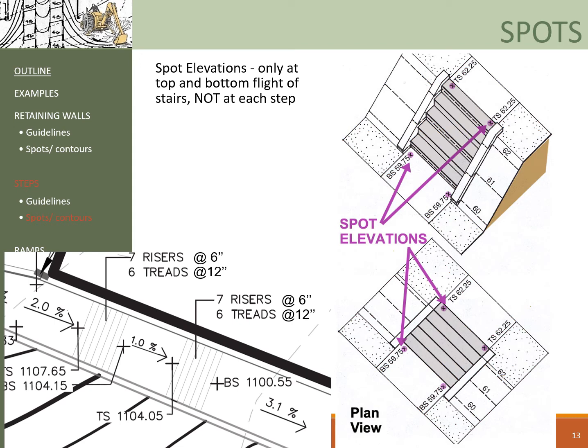You don't have to label TS and BS at both ends. Additionally, you need to calculate how many risers and treads each flight has and label their quantities and dimensions. For example, for a given flight of stairs, you might have seven risers at six inches high and six treads at 12 inches deep. This is the way you should represent stairs in your exercise.